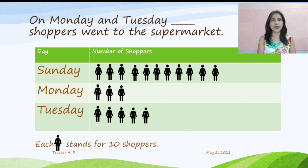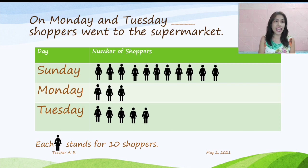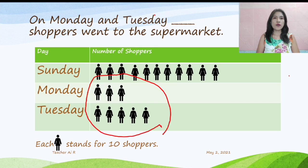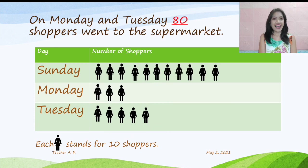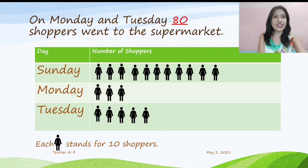The next question: on Monday and Tuesday, blank shoppers went to the supermarket. We are going to count the pictures on Monday and Tuesday by skip counting by 10. So, we have: 10, 20, 30, 40, 50, 60, 70, 80. On Monday and Tuesday, 80 shoppers went to the supermarket.